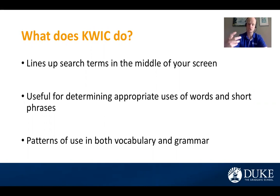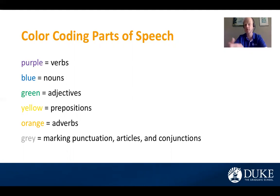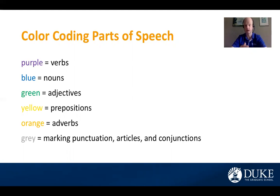So before I actually show you the quick search function, you're going to see something a little different than the other searches in COCA, and that is different color coding schemes. Like I have said in previous videos, COCA will tag the parts of speech in the corpus — in other words, it knows which words are verbs, which words are nouns, which words are adverbs, etc. So when you're doing a quick search, it color codes these parts of speech so you can easily see what part of speech might come directly before or after a search that you have made.